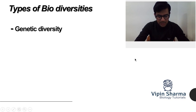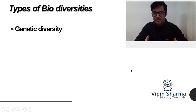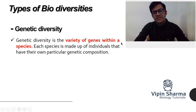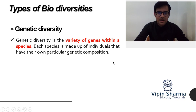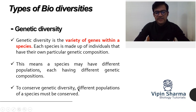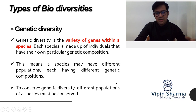You have a different genetic makeup, I have a different genetic makeup — every individual has a different genetic makeup — but what is common is that we all belong to the same species, Homo sapiens, yet we have a different genetic pool. So genetic diversity is the variety of genes within a species. This means a species may have different populations, each having different genetic composition. To conserve genetic diversity, different populations of the species must be conserved.